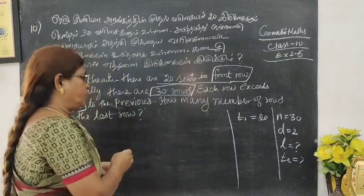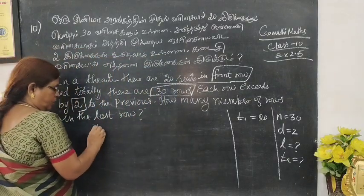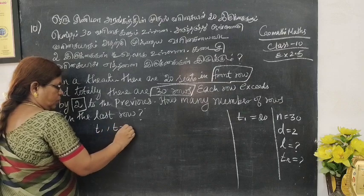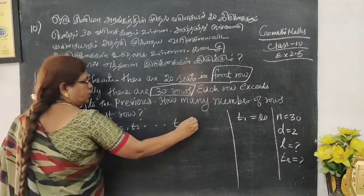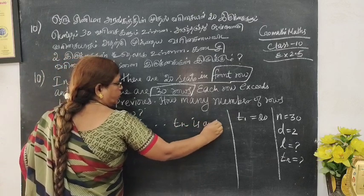L is the last row. First, T1, T2, T3, etc. Last row in front row. TN is an AP. This question is an AP.